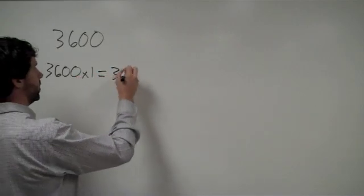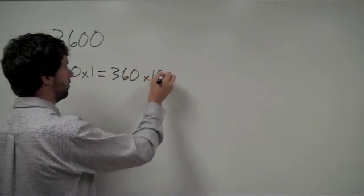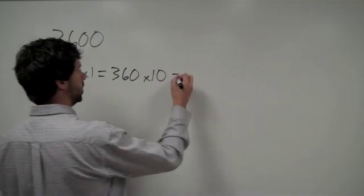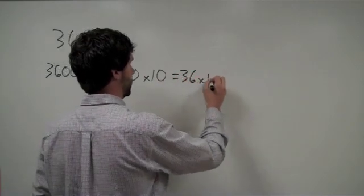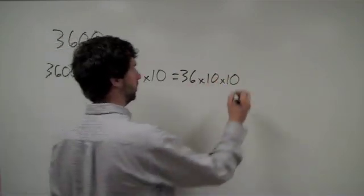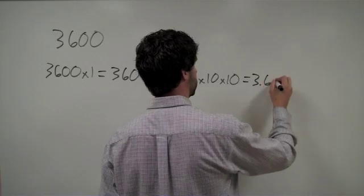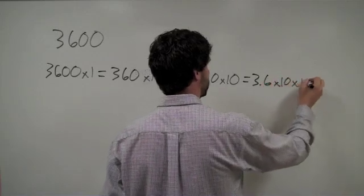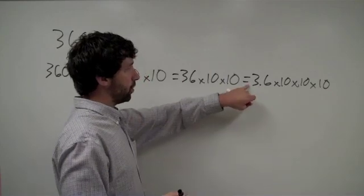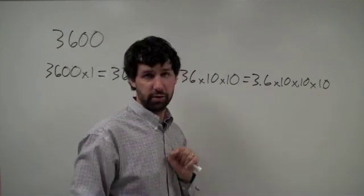I could also take 360 and times by 10. That's still equal to 3600. I could take 36, and I could times by 10 twice. Still the same number. Or I could take 3.6 and times by 10 three times. And for that matter, we could even go to 0.36 and times by 10 four times.